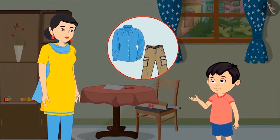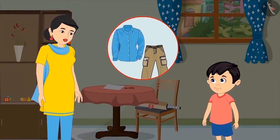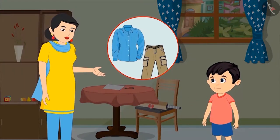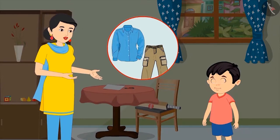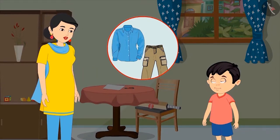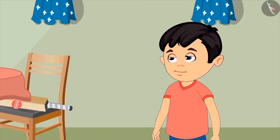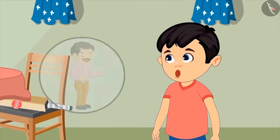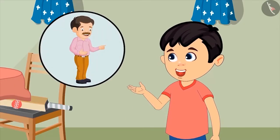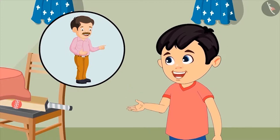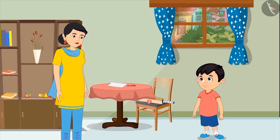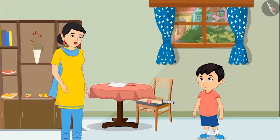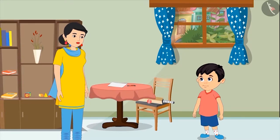Chotu answers: "Pant and shirt?" Mom says: "Yes Chotu, pant and shirt are also a pair. But Chotu, can you tell me how these two are also in a pair?" Chotu explains: "Yes, we wear pants and shirt together, so both of them are in a pair. Isn't it mom?" Mom replies: "Yes Chotu, very good. Come on now, quickly get ready for your class, otherwise you will get late."